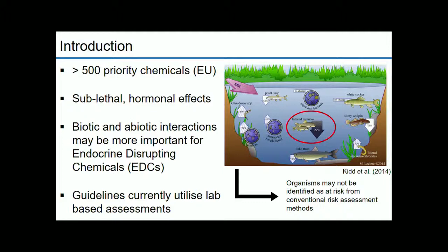At the moment, the guidelines we use to assess ecological risk utilize relatively simple lab-based assessments on individuals and populations to try to relate environmental concentrations of these chemicals to known ecological effects. The issue with some of these tests is that organisms may not be identified as at risk by conventional assessments, for a variety of reasons I'll describe later.